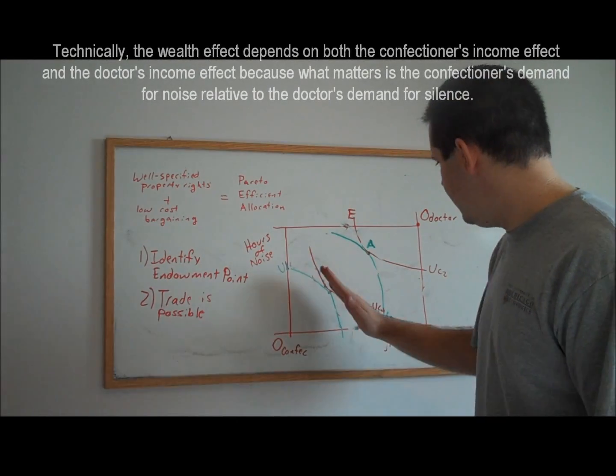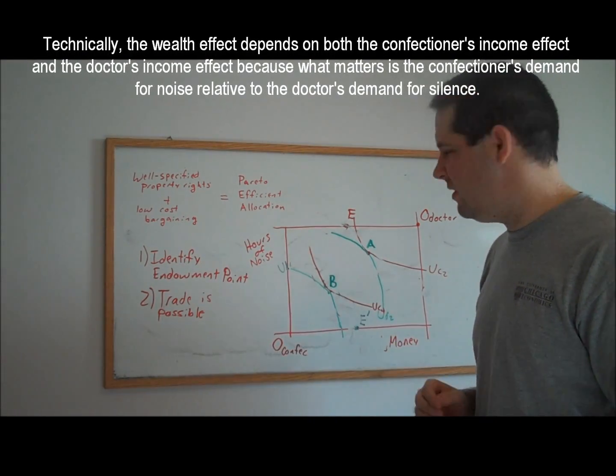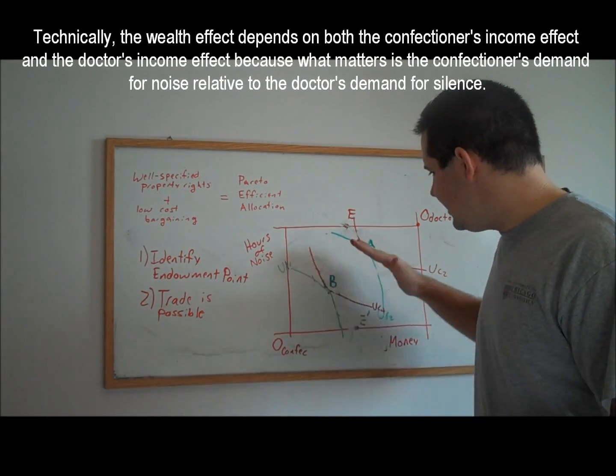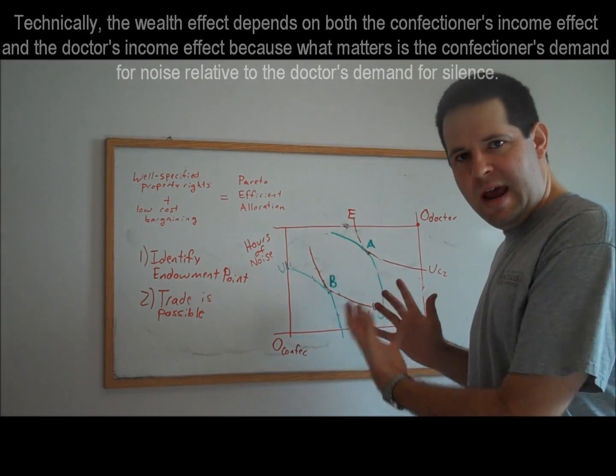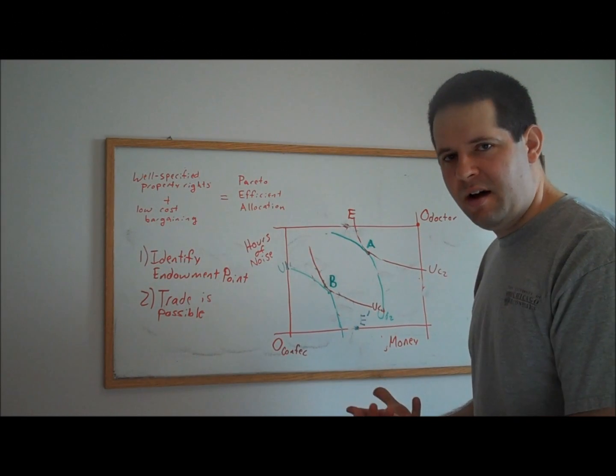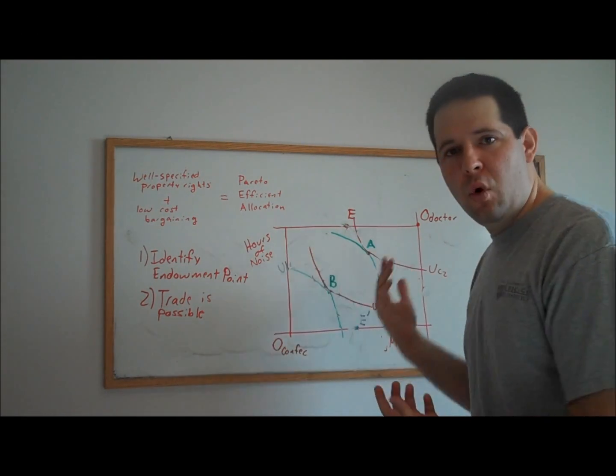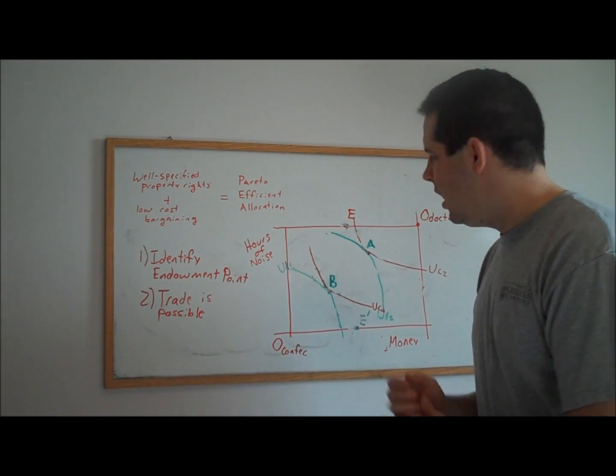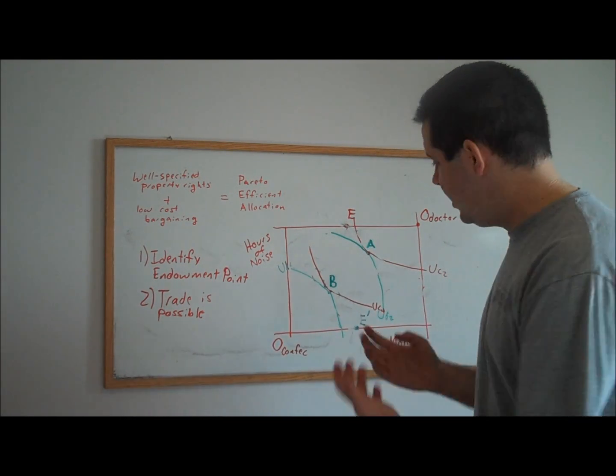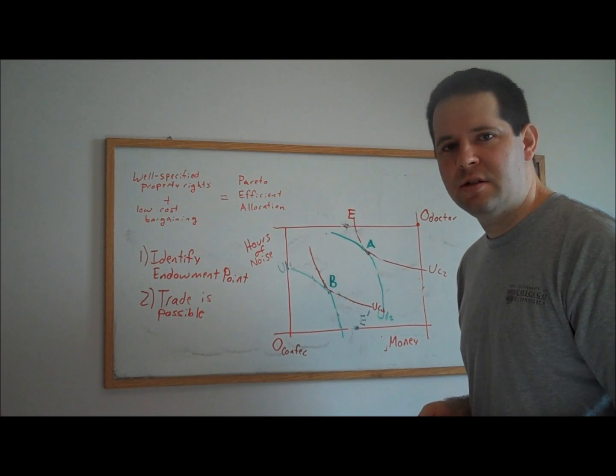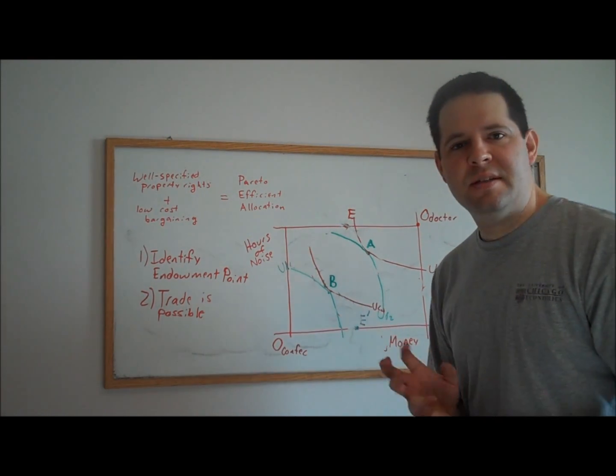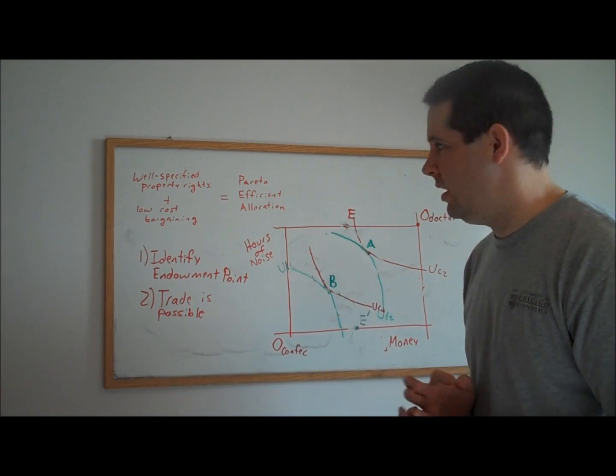And so if this good has an income effect, there's not going to be the same amount of the good demanded at allocation A as there is in allocation B. And so as we can see here, hours of noise is going to be a normal good for both of these individuals. And so it makes sense that when you have more wealth, when you actually have the property right, you feel like you have more wealth, and you demand more of that externality good, you're going to have a different amount of the externality good in the various bundles. Both of these are Pareto-efficient allocations, but they don't have the same amount of the externality in them.